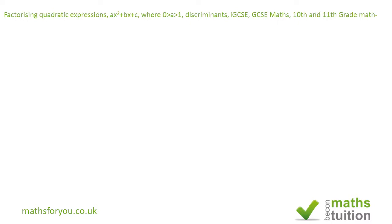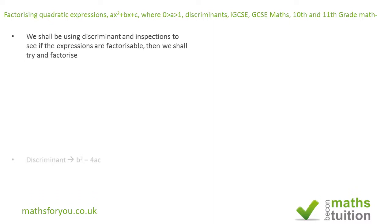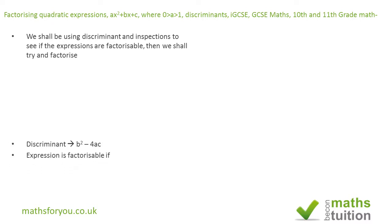We shall rely heavily on the discriminant expression. The discriminant has the expression b squared minus 4ac, where b is the coefficient of x, a is the coefficient of x squared, and c is a constant. When b squared minus 4ac is greater than or equal to zero, the expression can be factorized. If b squared minus 4ac is less than zero, the expression cannot be factorized.